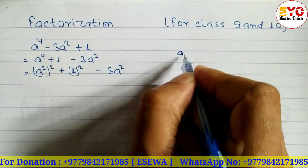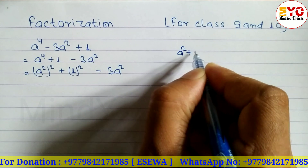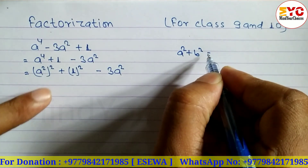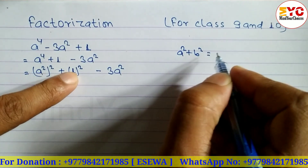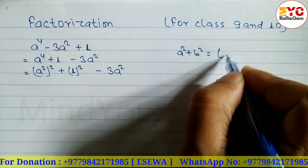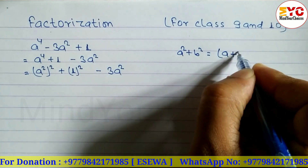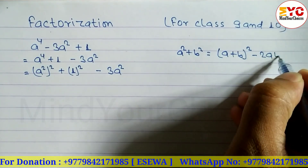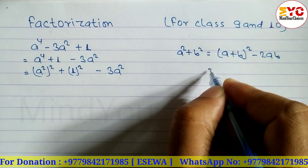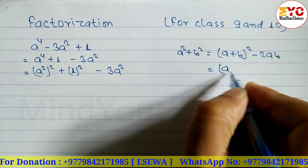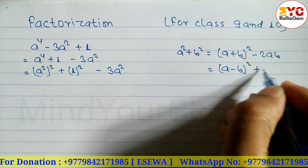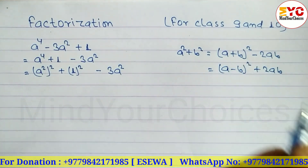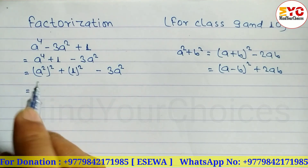We have two formulas for a² plus b² that we can use here. The first formula is: a² + b² = (a + b)² minus 2ab. The second formula is: a² + b² = (a minus b)² plus 2ab. Out of these two formulas, we have to use one.